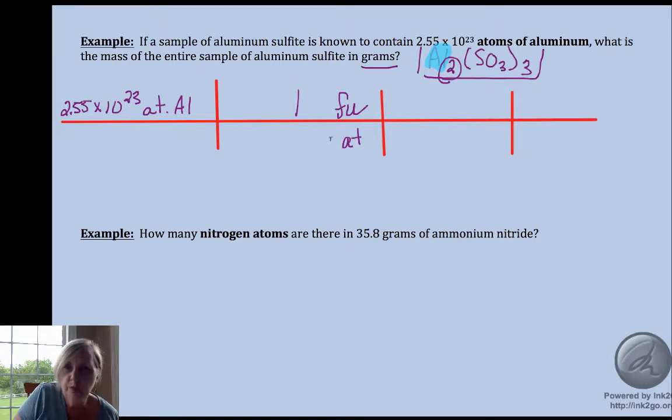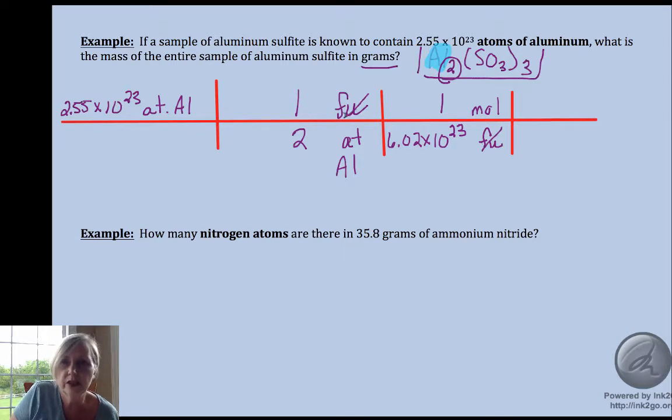I've got three steps here. You start to see why I use dimensional analysis. If you were using proportionalities, this would take a while. Atoms to formula units - for every one formula unit we have two aluminums. So now I'm in the formula unit world. I want to get rid of formula units and go to moles.